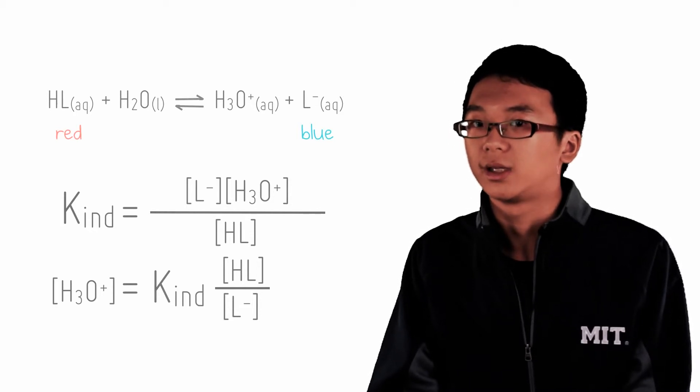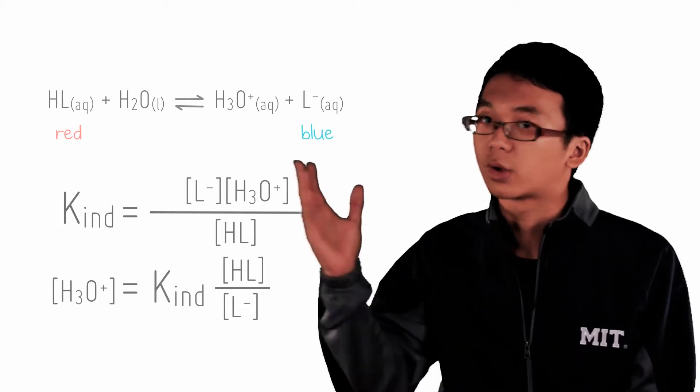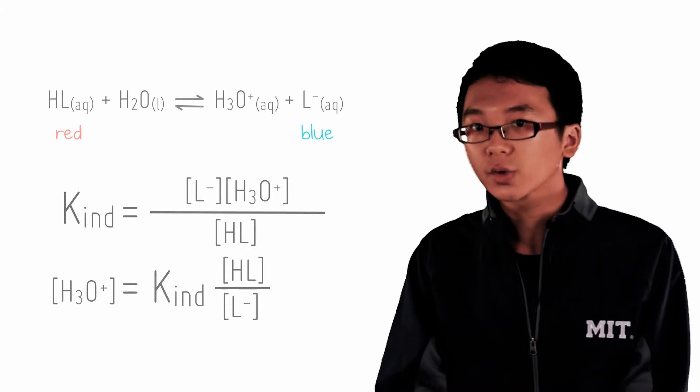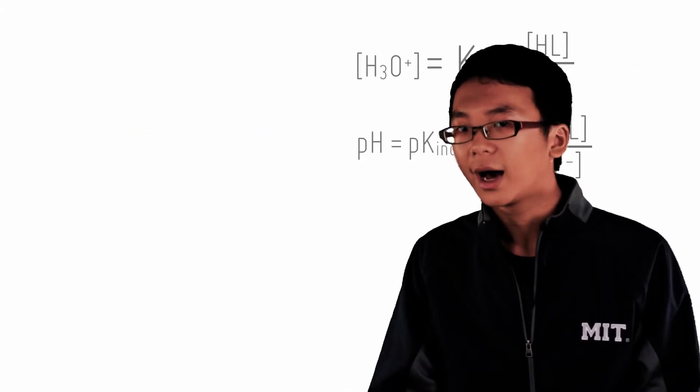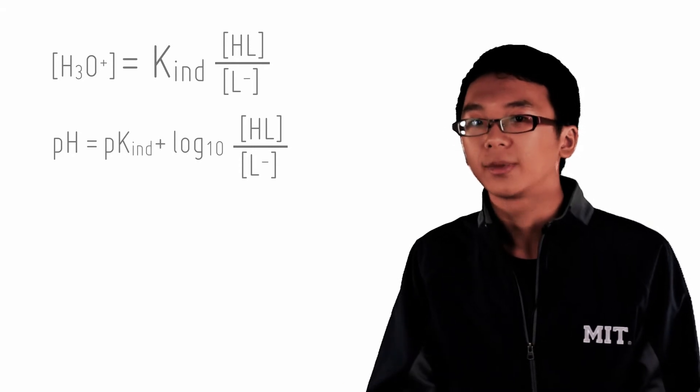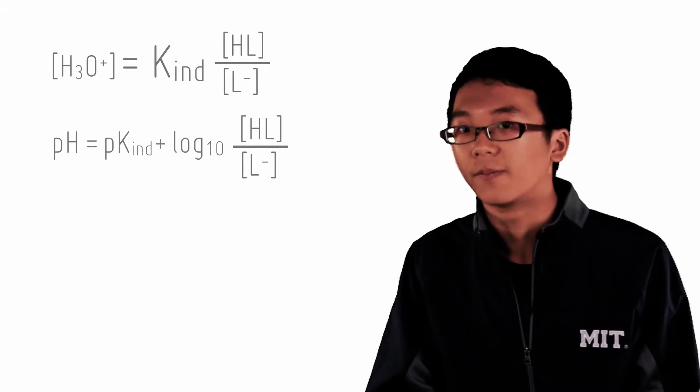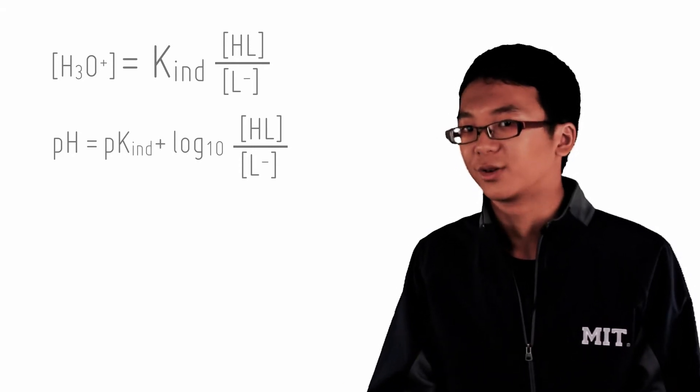HL represents the undissociated form of litmus and L- represents the conjugate base. So when the concentrations of indicator and its conjugate base are equal, hydronium equals to Kin. And if we took a negative log on both sides, pH equals to pKin.